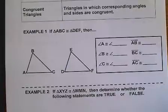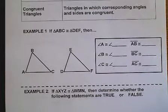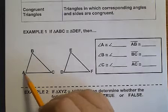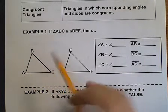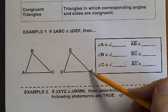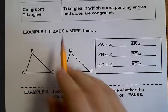So let's take a look at example number one. Here it says that triangle ABC is congruent to triangle DEF. Now the order of these letters is very important.